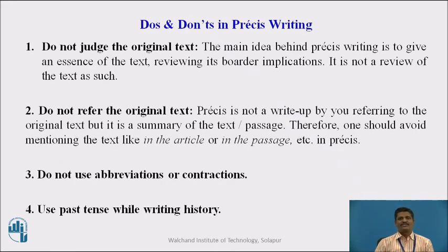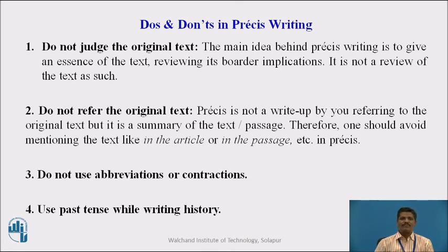Here are some do's and don'ts in precis writing. First, do not judge the original text — the main idea is to give an essence of the text by reviewing its broader implications, not to review it as such. Second, do not refer to the original text; avoid mentioning phrases like 'in the article' or 'in the passage' in the precis. Third, do not use abbreviations or contractions. Fourth, use the past tense while writing history.